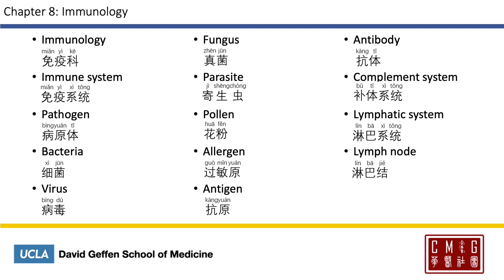Immunology as a medical specialty is 免疫科, and infectious disease is 流行性疾病科. The immune system is 免疫系統. Pathogen is 病原体, 病 meaning a disease, 原体 meaning a source object. Bacteria is 細菌, and virus is 病毒. Fungus is 真菌. Parasite is 寄生虫. Pollen is 花粉.